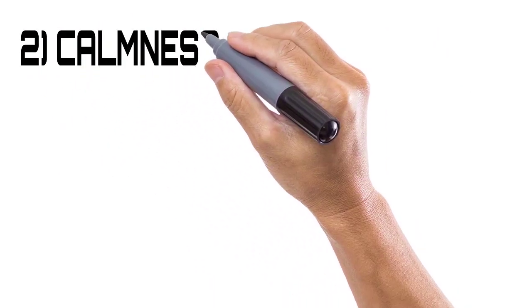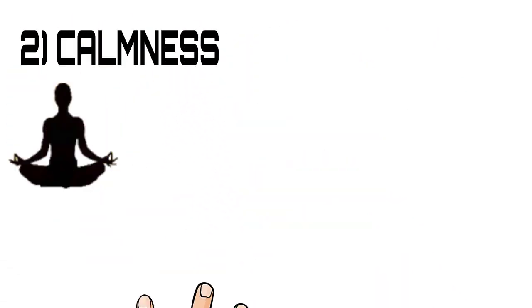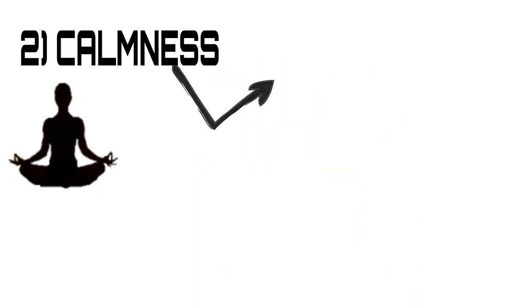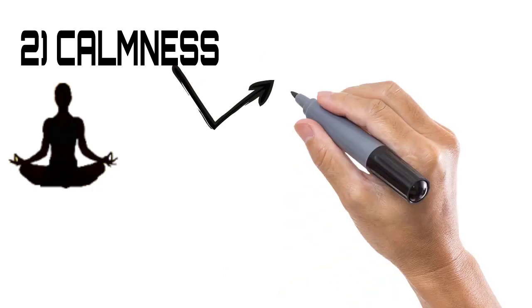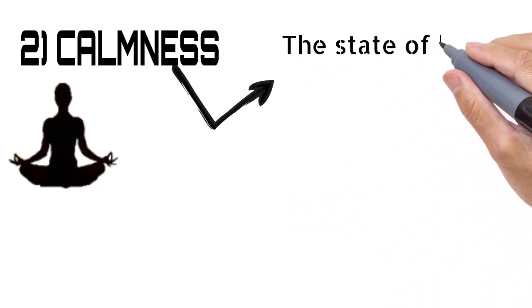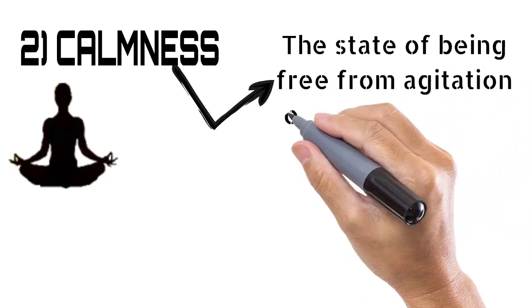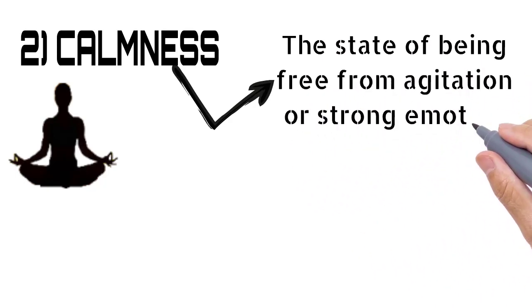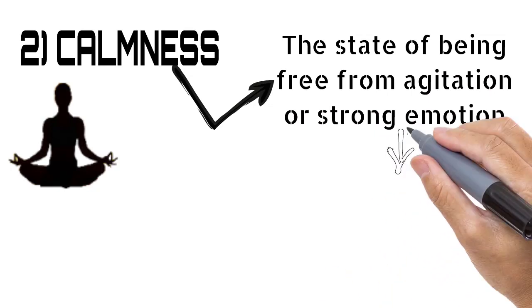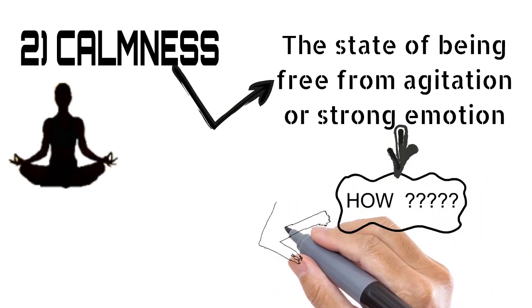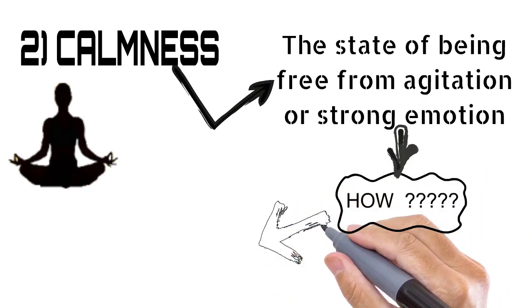The second point is Calmness. Are you thinking I'm talking about something like meditation? Yes, that's right. Calmness is the state of being free from agitation or strong emotion. You have to free yourself from strong emotion and focus on what's going on. So how would you do it?